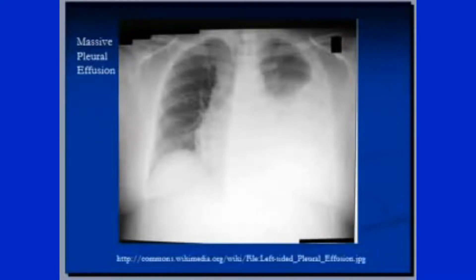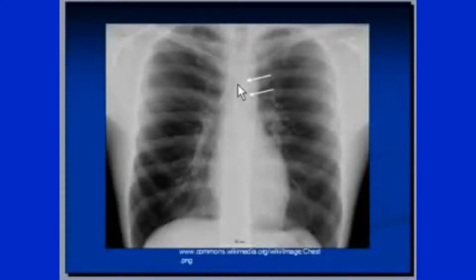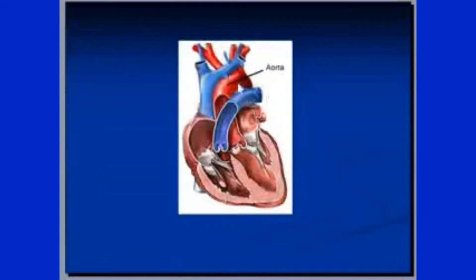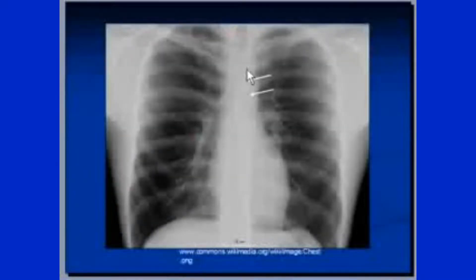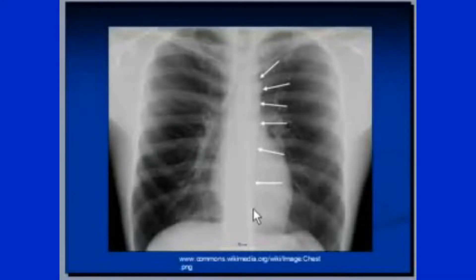Just before bifurcation, the trachea is always pushed towards the right to accommodate the aortic arch, which is visible here. The rest of the thoracic aorta is visible as a sharp line moving towards the midline to enter into the abdomen through the diaphragm.